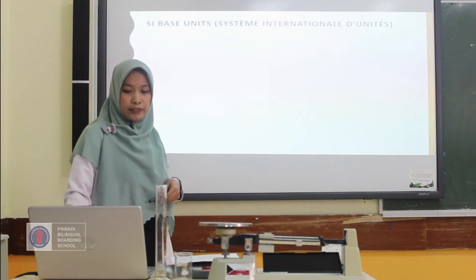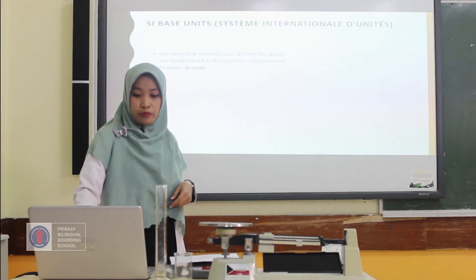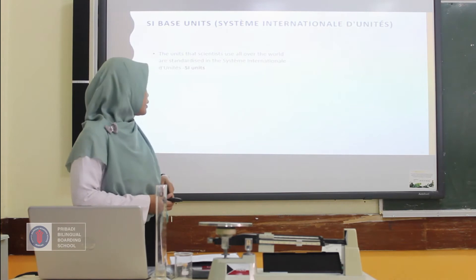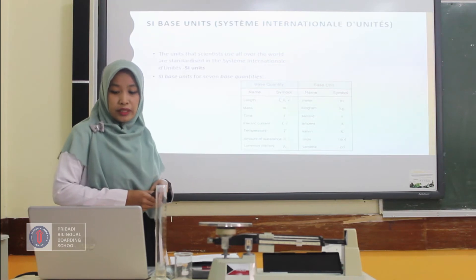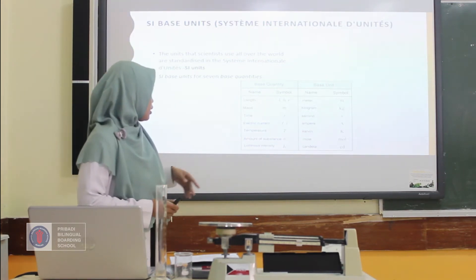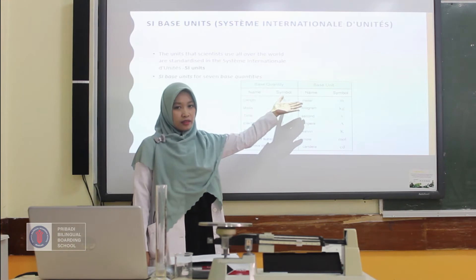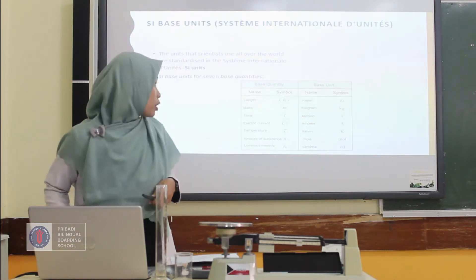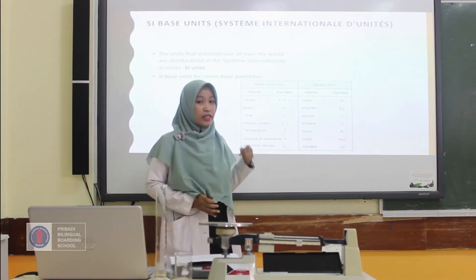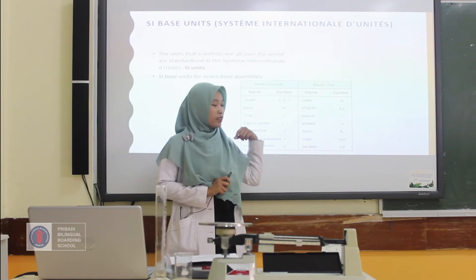In physics, we classify units into base units, the international system of units, and metric units. For SI base units, we know there are 7 base quantities with their corresponding base units. I'm sure you already know about length with the unit meter, mass in kilogram, and so on. Of course, you also know about kilogram and gram for mass, or cm and km for length.